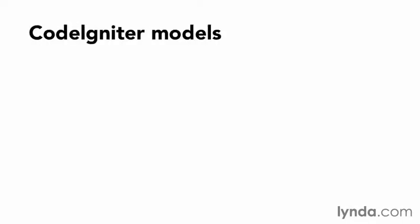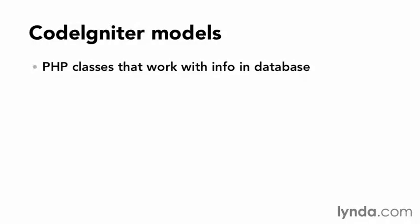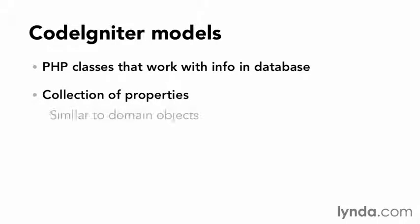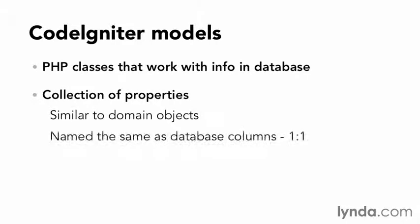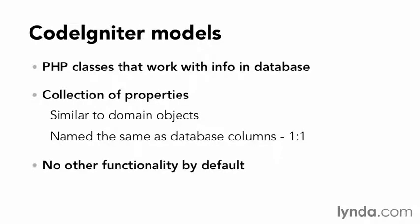CodeIgniter defines models as PHP classes that work with information in a database, which is pretty vague. Out of the box, they're treated just as a collection of properties, which is similar to a domain object. These properties are named exactly the same as the database columns, with a one-to-one relationship. CodeIgniter models contain no other standalone functionality by default.